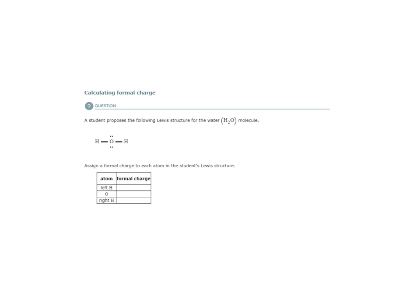So here we are again, calculating formal charge. We're going to assign a formal charge for each atom in this potential Lewis structure. So again, formal charge is equal to the number of valence electrons minus the lone pair electrons minus half of the bonding pair of electrons.